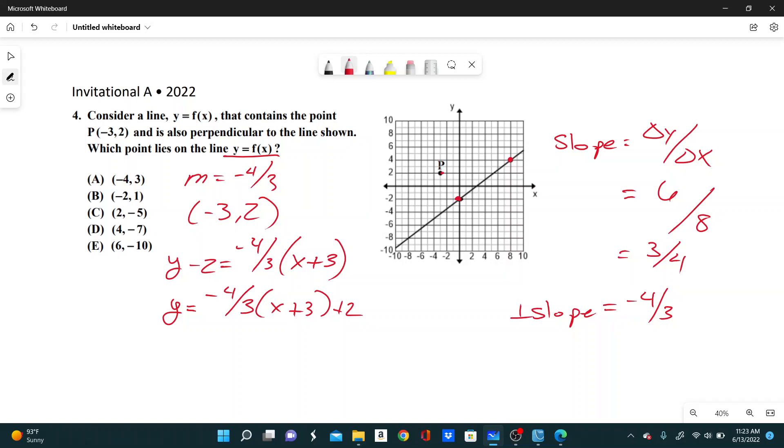If I do E and plug 6 in for x, 6 plus 3 is 9, 9 times 4 thirds is 12, and then it'll be negative 12 because you have negative 4 thirds, plus 2 gives you negative 10. So it looks like our answer is E.